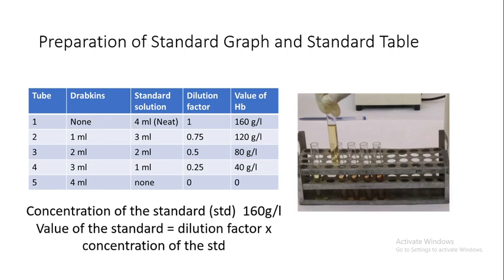In the third test tube, mix 1 ml of standard and 3 ml of Drabkin's solution. The dilution factor is 0.25. In the fifth test tube, take 4 ml of Drabkin's solution.